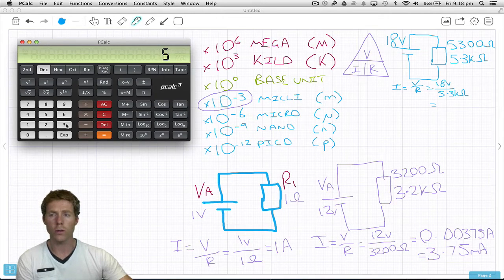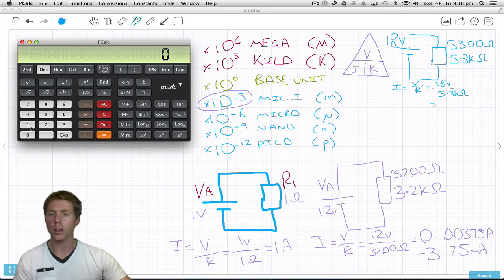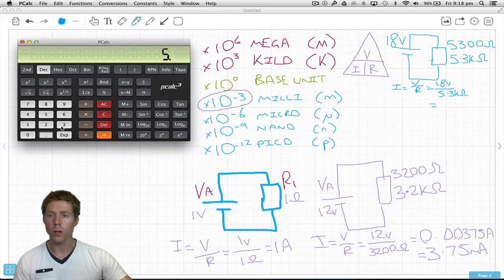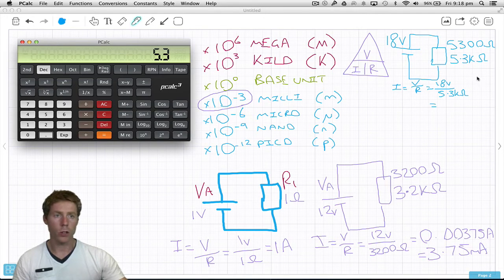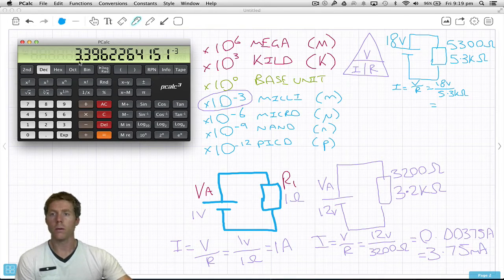We could do 5,300, but we don't want to. We want to go 18 divided by 5.3, exponential 3 to get k. Equals, and this gives the engineering notation: 3.396 and so forth.